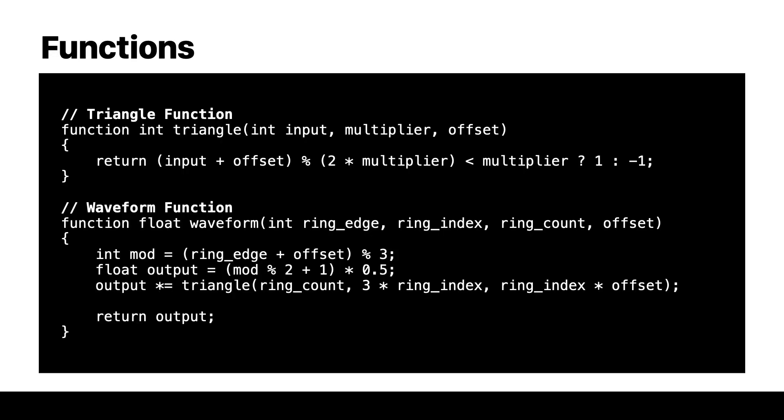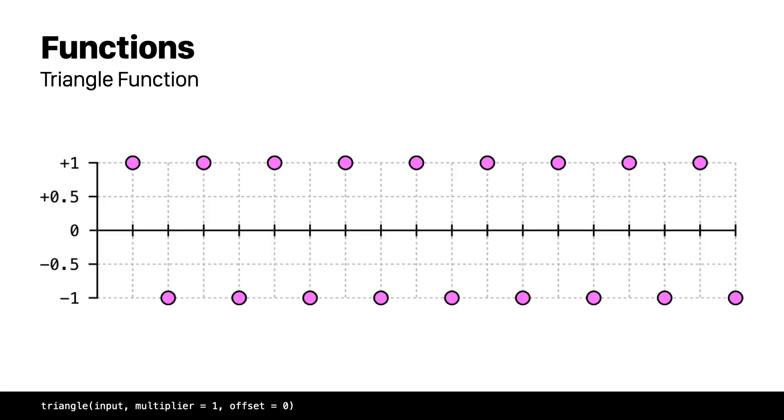We will also need some functions that return values we will be using as multipliers or iterators. The reason for these functions is that we need different oscillating values similar to the ones we get from waveform functions. The triangle function is going to return values that oscillate between plus one and minus one. We also need to have more step repetitions of the same value and we get that with a multiplier. So this is what we get with a multiplier of two and a multiplier of three.